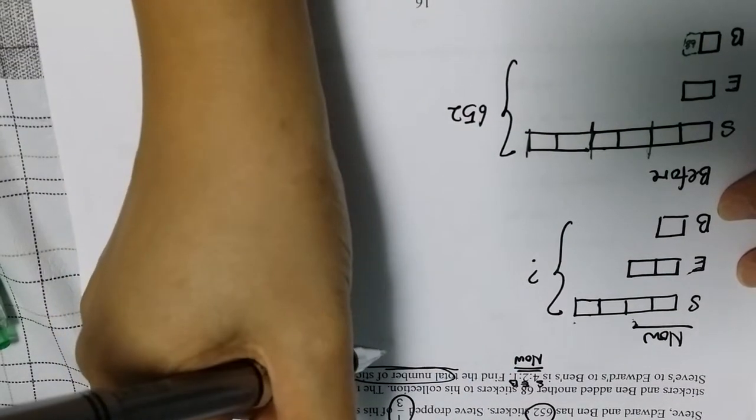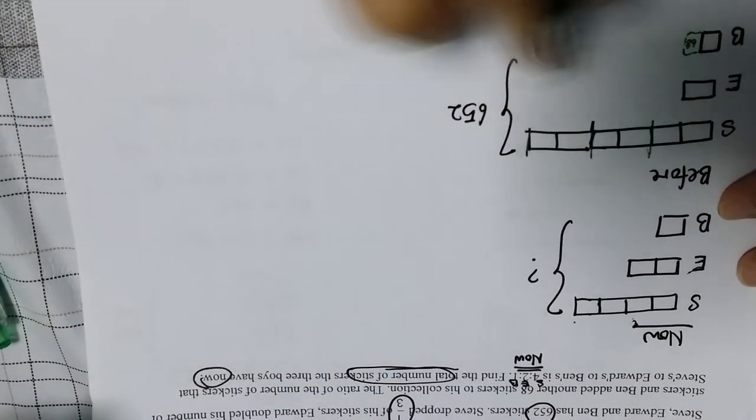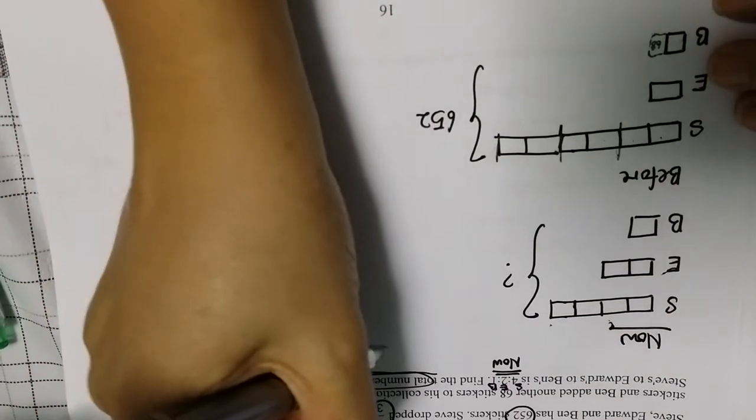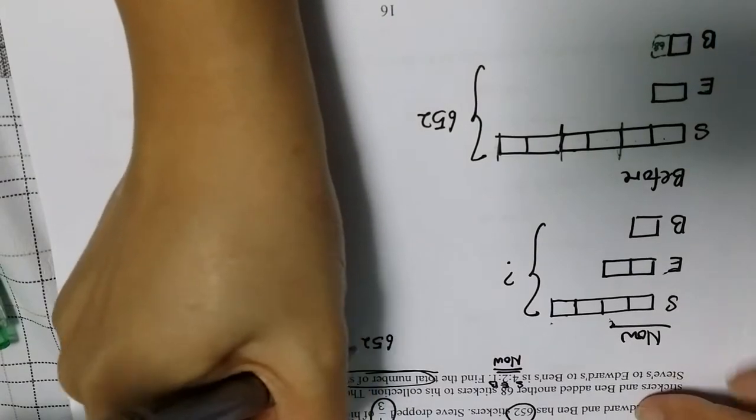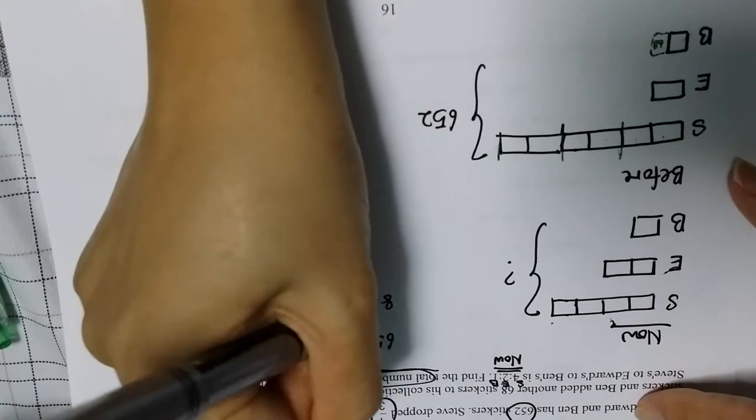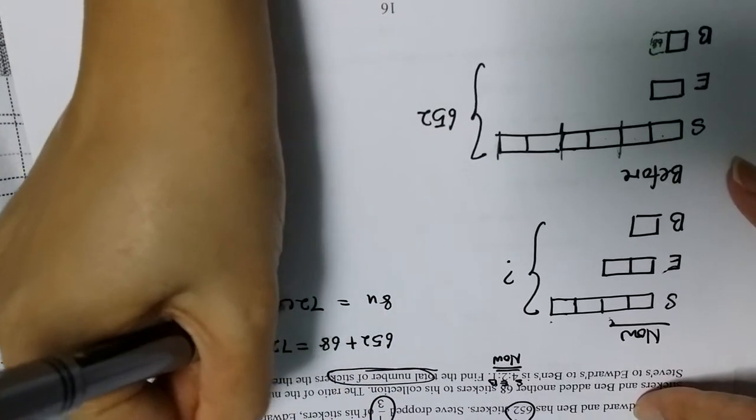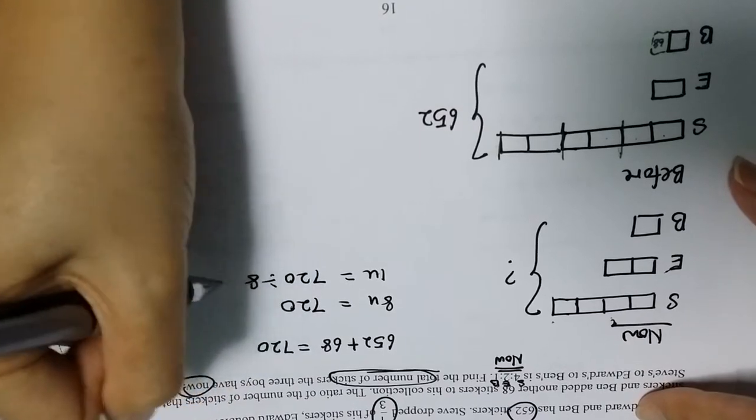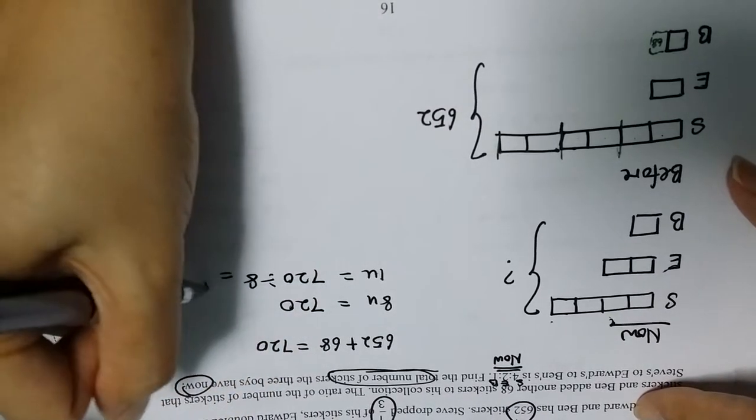And therefore I can start doing this now. I'm going to add this with this so that I have a nice 1, 2, 3, 4, 5, 6, 7, 8 unit. I have a nice 8 unit. Okay, so 652 I add with 68, I get 720. And therefore 8 unit equals to 720. 1 unit equals to 90.